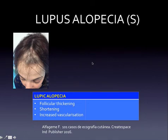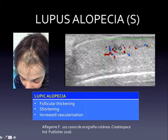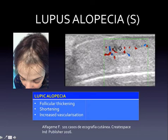Some immunological diseases such as lupus tend to produce this kind of scarring alopecia. We see follicle thickening with shortening and increased vascularization — this is very typical of lupus alopecia. Some immunological or collagen diseases present with this kind of follicle involvement.